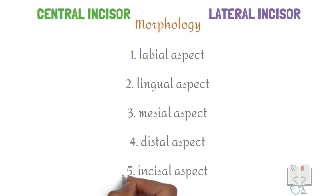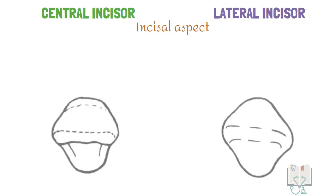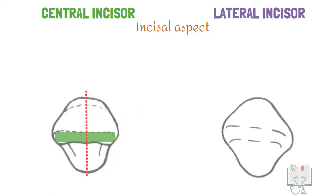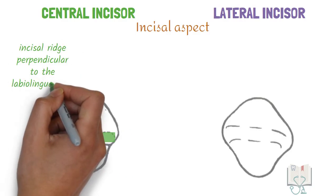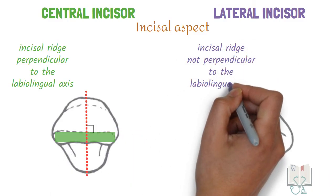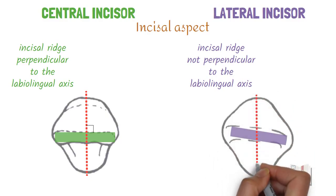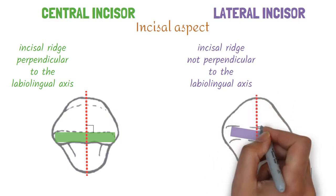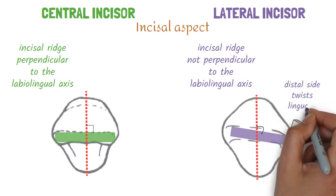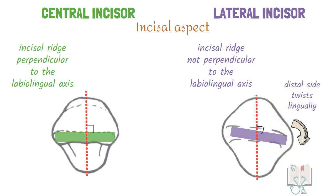Finally, the incisal aspect. The only difference from the incisal aspect is the angulation of the incisal ridge. In the central incisor, the incisal ridge is horizontal so that it is perpendicular to the labial-lingual axis. But in the lateral incisor, the incisal ridge is not perpendicular to the labial-lingual axis but at an angulation. This is because the distal side of the crown has a twist in the lingual direction.